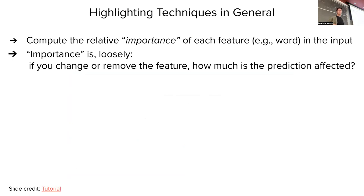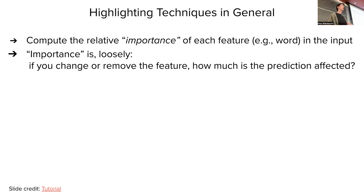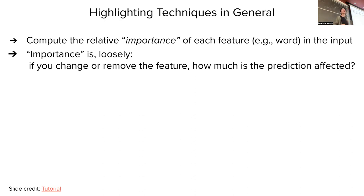Highlighting techniques compute the relative importance of each feature — for example, a word in the input — relative to all the other words. Importance is defined loosely: a word is important if removing it from the input would change the model's prediction a lot. If the word were not important, removing it would likely have no effect on the model prediction.